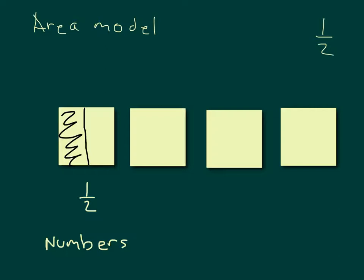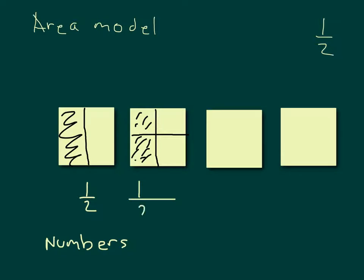So that there is 1 half. Now if we look at the next model here, we'll start again with 1 half and look at one of those parts. But what we're going to do is divide horizontally as well. Now we actually have four parts altogether, and the equivalent for 1 half is two of those four parts. With numbers, we took 1 half and multiplied by 2 in the numerator and denominator — because we divided into two more parts — so 1 times 2 is 2, and 2 times 2 is 4. There are four parts altogether and we're looking at two of those, so 2 fourths does equal 1 half.